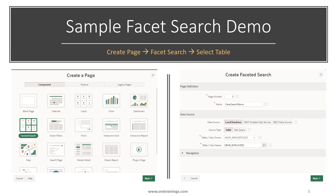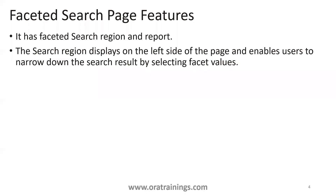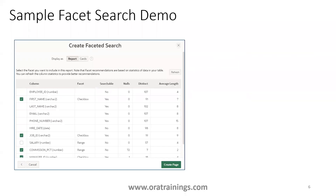The source type can be either a database table or a SQL query. In this example, I have selected OEHR underscore employees. Once you select the data source, click Next. By default, it shows a list of columns available in your data source and provides facets. Based on the data type, it automatically considers whether to use a checkbox or a range.